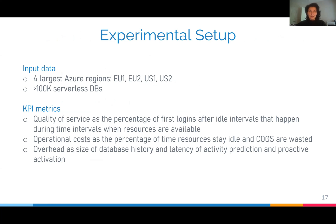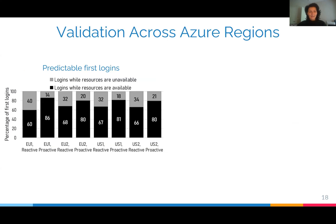We have analyzed the impact of this proactive policy. We evaluated four of the largest Azure regions — two in the US and two in Europe — where more than hundreds of thousands of serverless databases are currently deployed. We evaluate quality of service as the percentage of first logins after idle intervals that happen when resources are available, operational costs as the percentage of time resources stay idle and costs are wasted, and overhead as the size of database history and the latency of activity prediction and proactive activation. The reactive policy achieves 60% of first logins during resource-available intervals, while the proactive policy bumps this to 86%, thanks to proactive resume ahead of predicted customer activity.